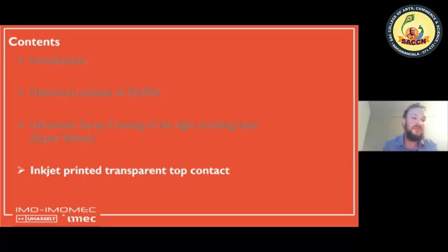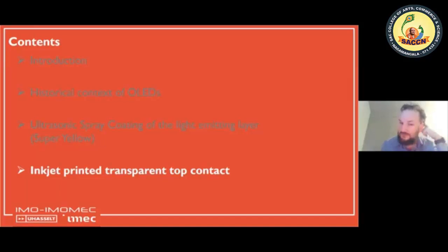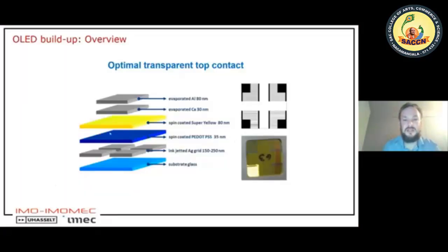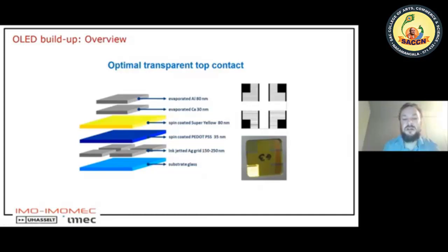For example, we are removing calcium as the electron injection layer and replacing it with white polymers. We would also like to use transparent top contacts, so we use inkjet printing. The standard anode is indium tin oxide (ITO), which is transparent but deposited by vacuum. We are thinking of replacing ITO with a transparent conductive material using silver — but silver is not transparent when printed relatively thick at 150 to 250 nanometers. So we should make a grid to maintain transparency.